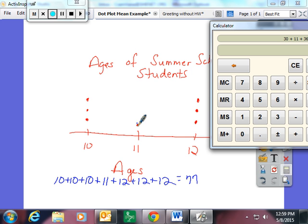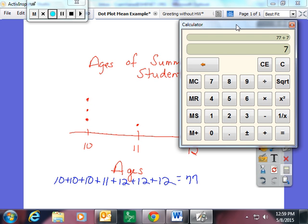Seventy-seven divided by seven is going to give you a quotient of eleven.